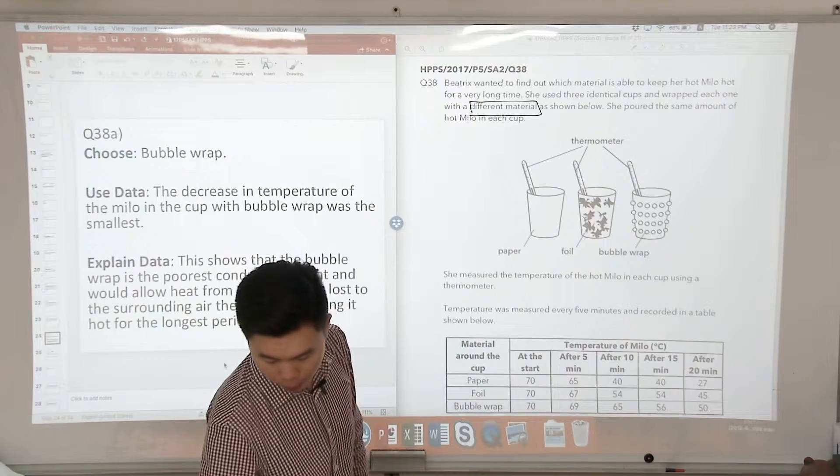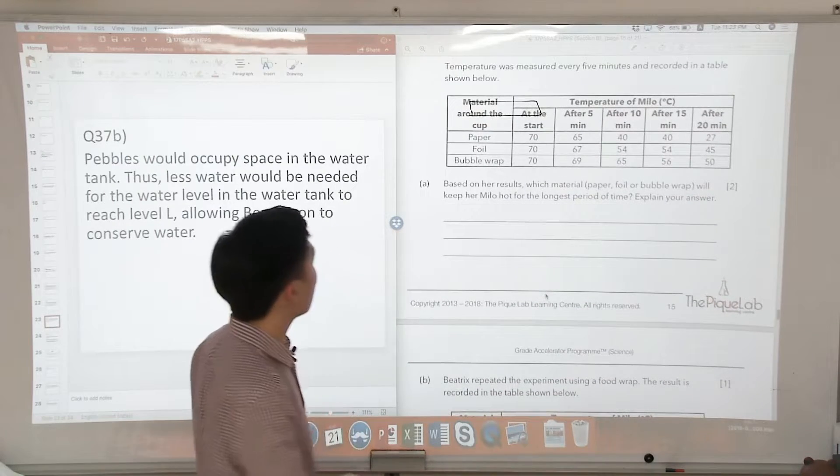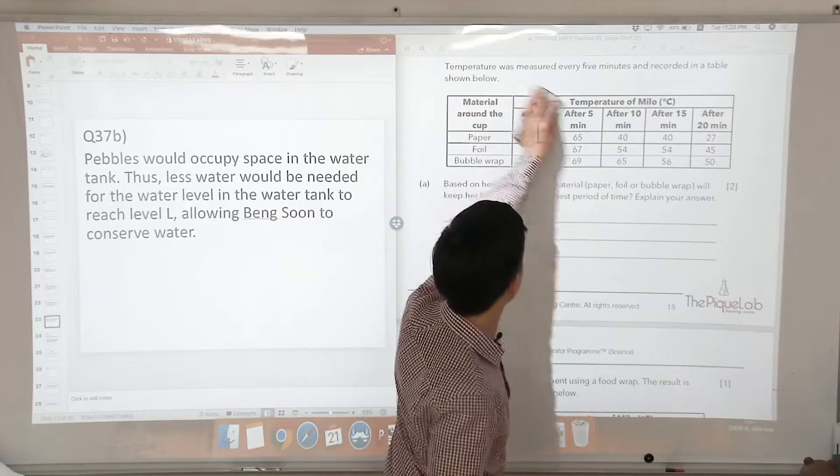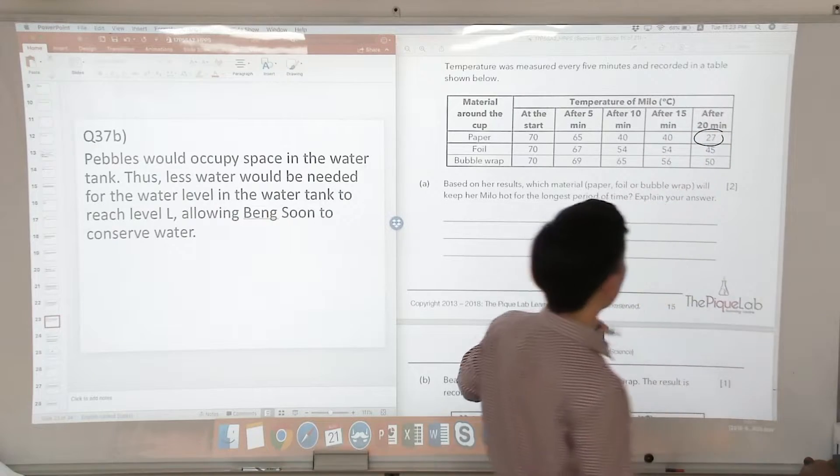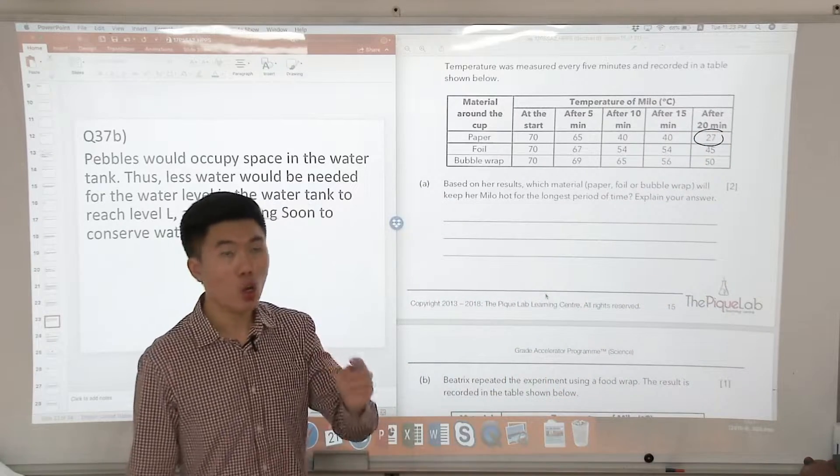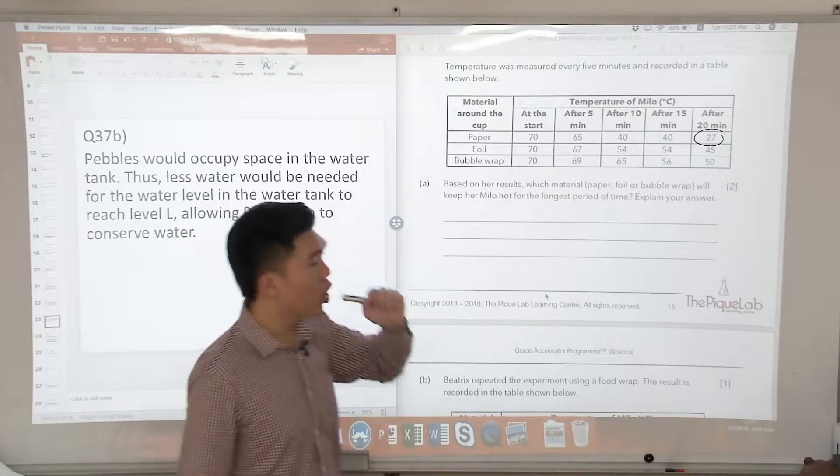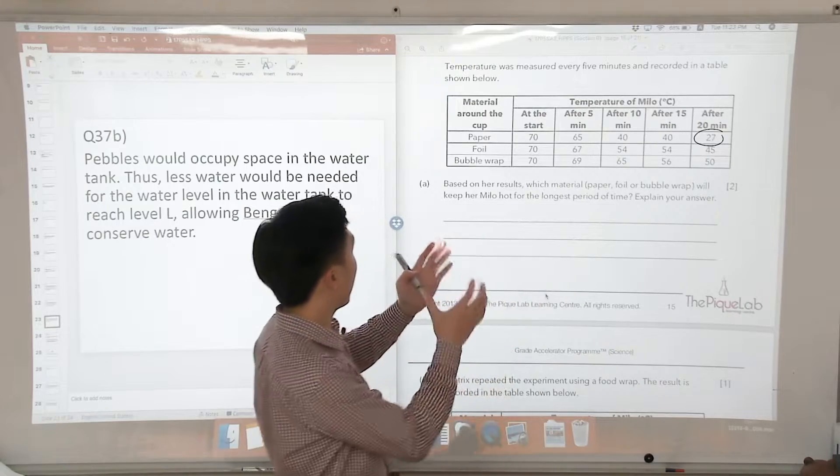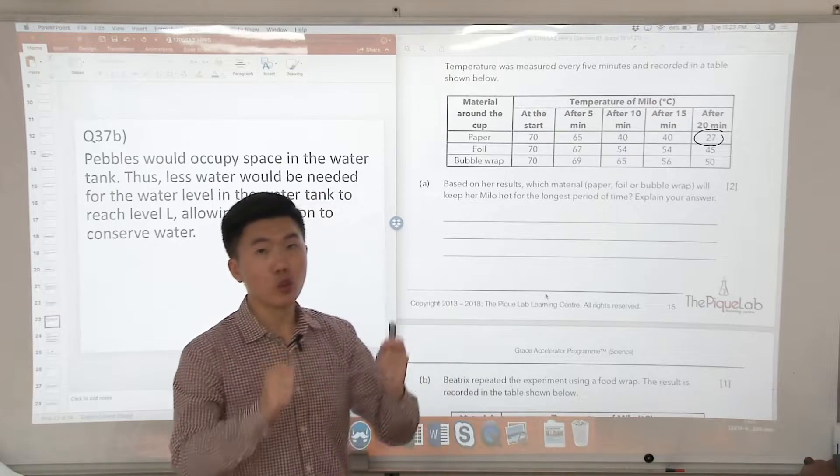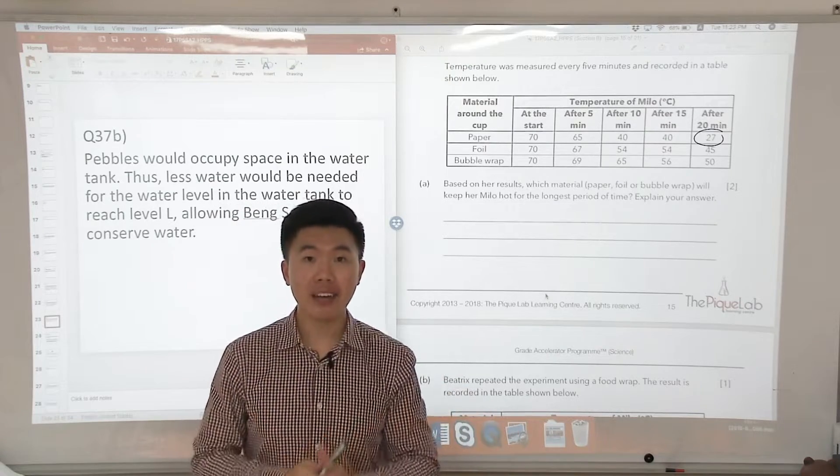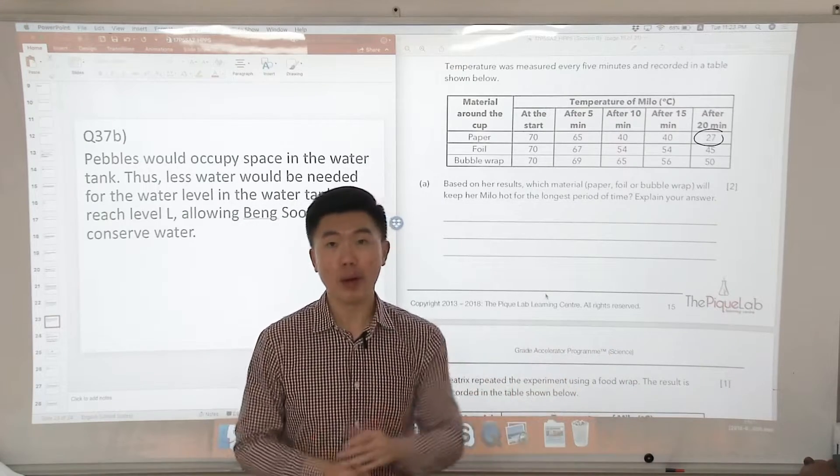Let's look at the information in the table. If you look at the information in the table, you will notice that for the paper, after 20 minutes, the temperature is the lowest. So if the temperature is the lowest, what does that mean? That means the heat from the hot Milo in the cup that was wrapped with paper was lost to the cooler surroundings at the fastest rate. If you notice, I use the word fastest instead of faster.